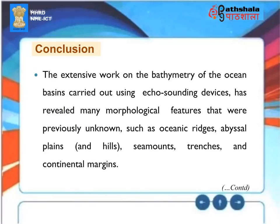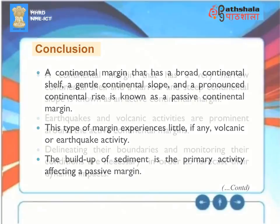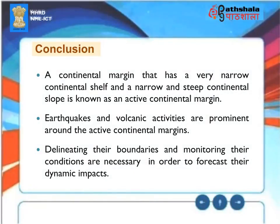Conclusion. Extensive work on the bathymetry of ocean basins using echo-sounding devices has revealed many morphological features previously unknown, such as oceanic ridges, abyssal plains and hills, seamounts, trenches, and continental margins. A continental margin that has a broad continental shelf, a gentle continental slope, and a pronounced continental rise is known as a passive continental margin — this type experiences little to no volcanic or earthquake activity, and the buildup of sediment is the primary activity. A continental margin with a very narrow continental shelf and a narrow and steep continental slope is known as an active continental margin. Earthquakes and volcanic activities are prominent around active continental margins, and delineating their boundaries and monitoring their conditions are necessary to forecast their dynamic impacts.